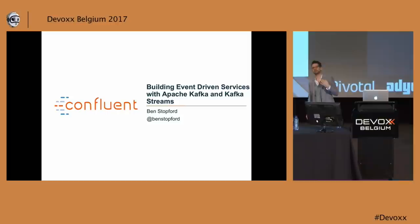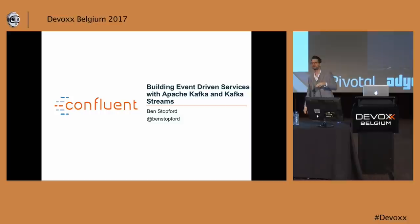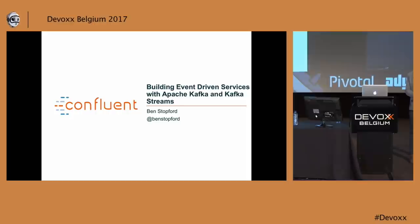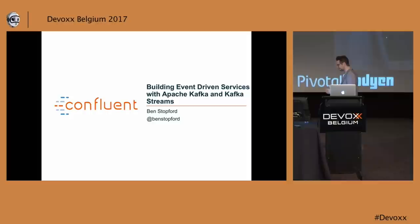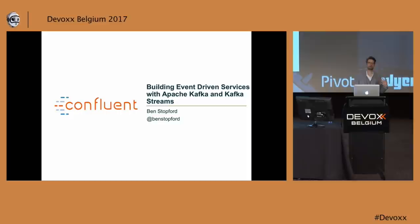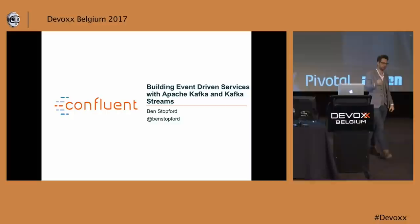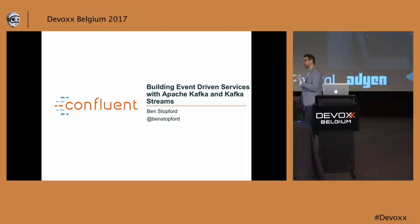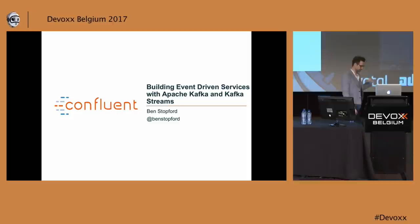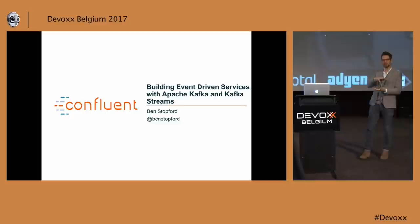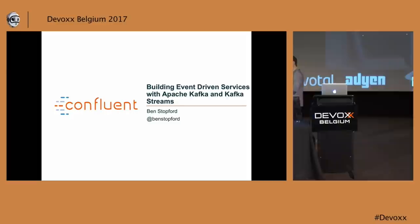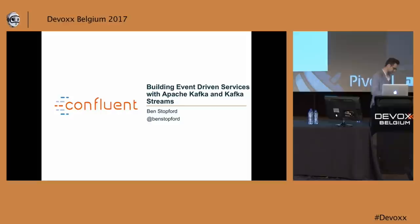I work at a company called Confluent. Confluent is the company that sits behind Apache Kafka — we basically provide support and there's an open source ecosystem behind this open source streaming platform. If you haven't come across Kafka before, it's an open source streaming platform, probably most well known for the distributed log, which is a very scalable messaging system that sits at the center of this platform.